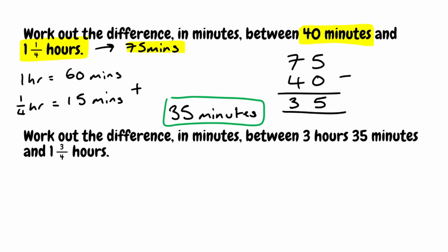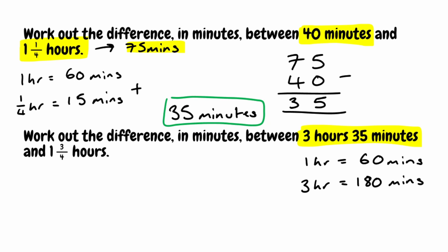For the last question, we want the difference in minutes between 3 hours 35 minutes and 1 and 3 quarter hours. Starting with 3 hours 35 minutes: 1 hour equals 60 minutes, so 3 hours equals 180 minutes. Adding the remaining 35 minutes gives us 215 minutes.